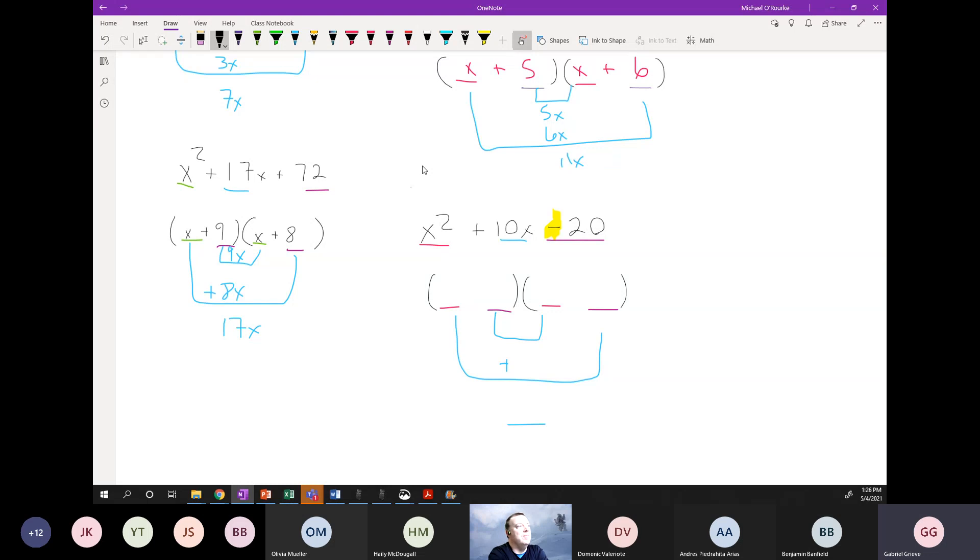I could be completely wrong, but I think it's five and negative five. Let's try it. Positive five and negative five. Okay, well, x times x equals x squared, but five times five is not equal to 20. So that's wrong.